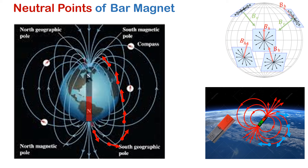One outstanding question is: why do we consider BH — the horizontal component of the earth's magnetic field — when finding the neutral points? When the magnet is lying on the surface of the earth, the magnet is much much smaller than the earth, so the magnetic field created by the magnet lies fairly in the horizontal plane.